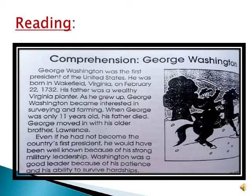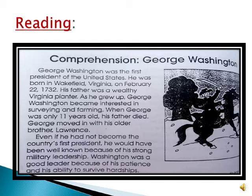Now come to the second paragraph. Even if Washington had not become the country's first president, he would have been well known because of his strong military leadership. Washington was a good leader because of his patience and his ability to survive hardships. The word 'well known' means very famous. 'To survive hardships' means to handle the difficult situations. 'Ability' means the power to do something.